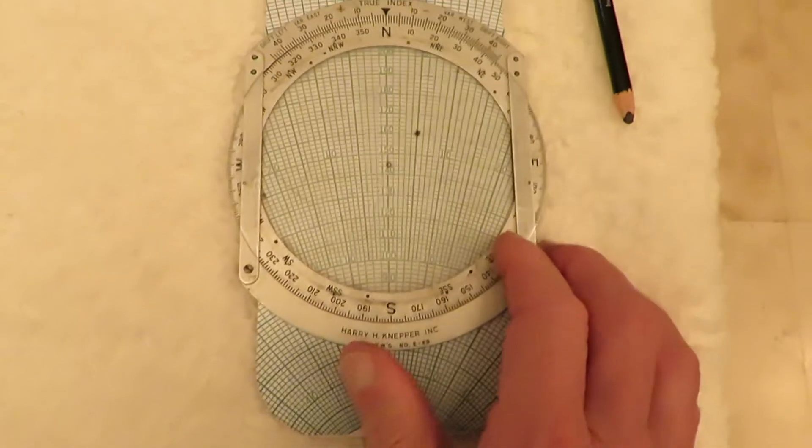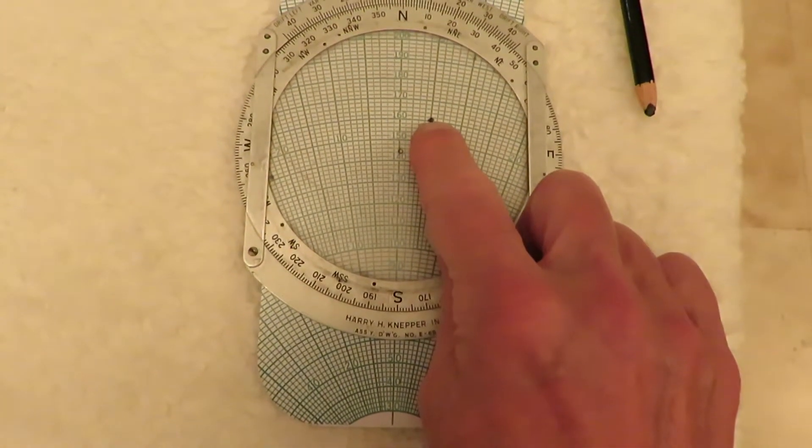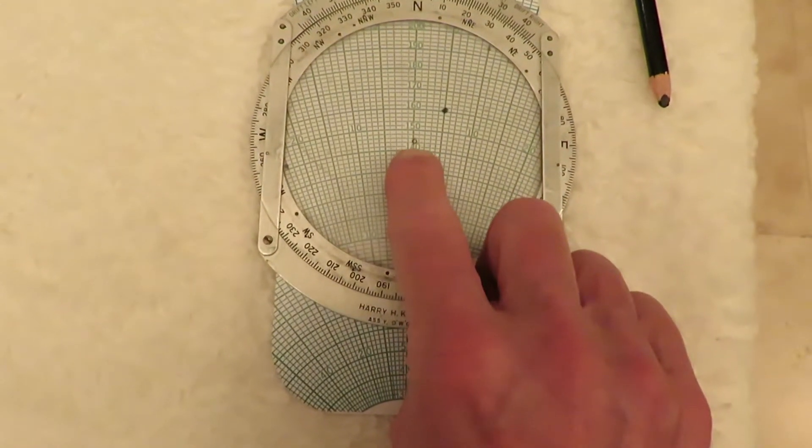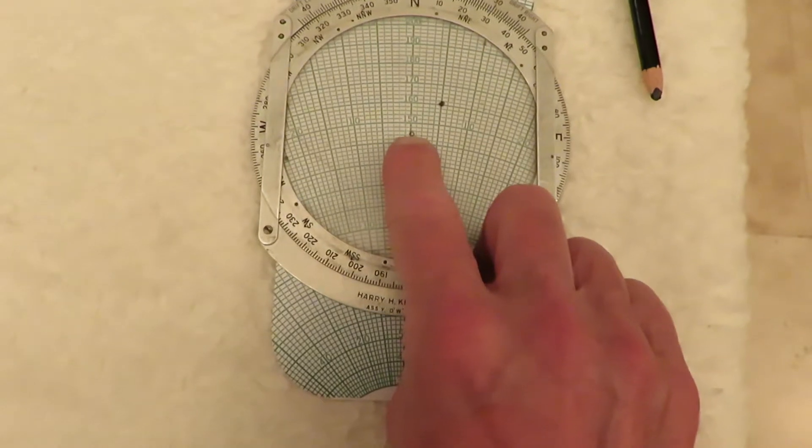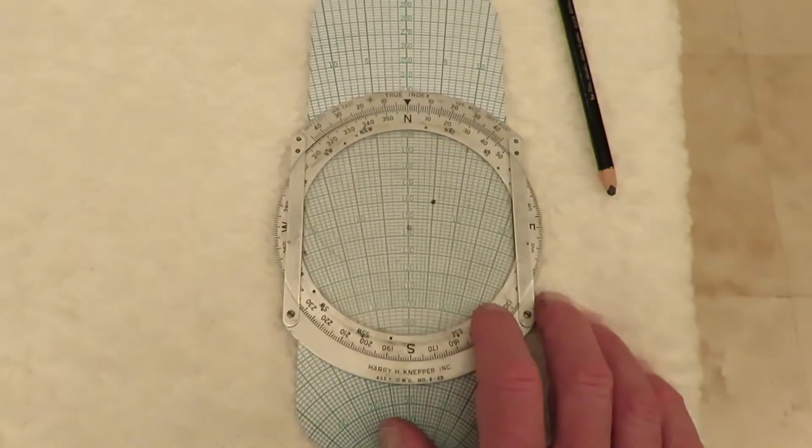You now learn two things. The first is that the drift angle will be 5 degrees to the right, and the new ground speed will be 144 knots. This is a simple illustration of how the drift problem can be solved.